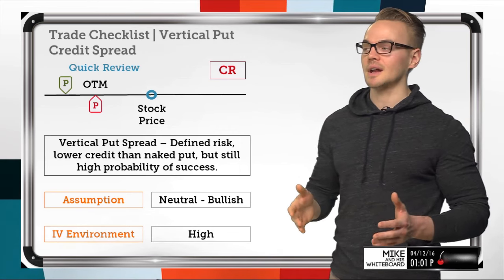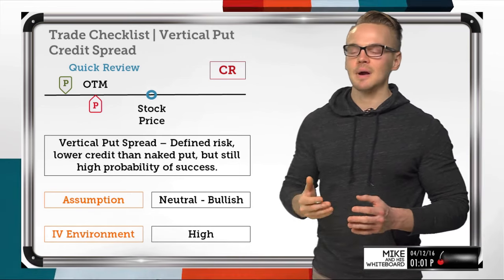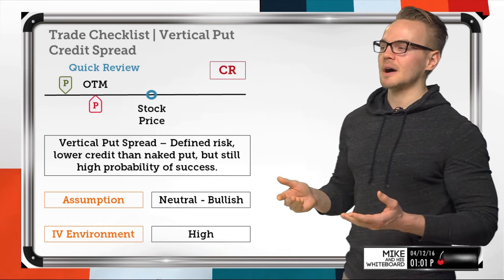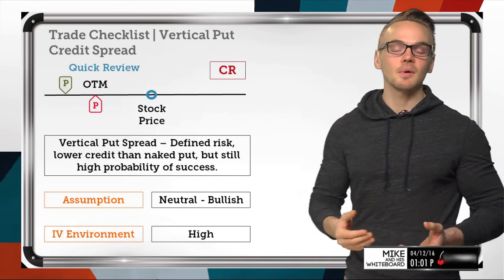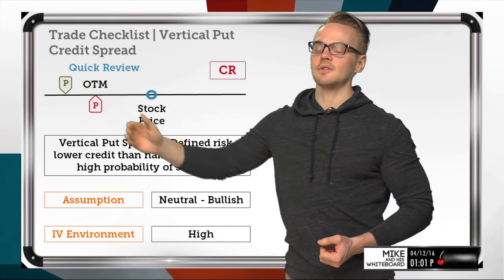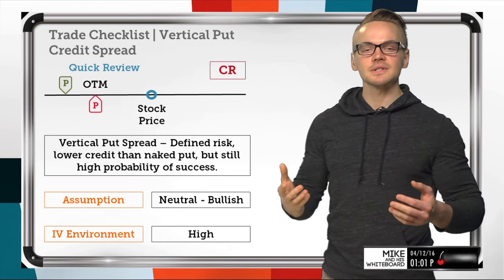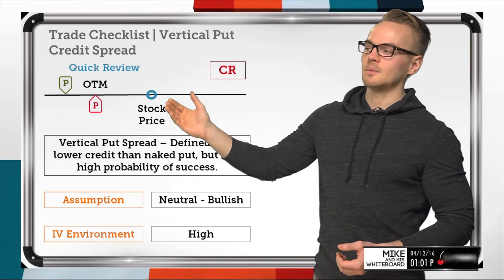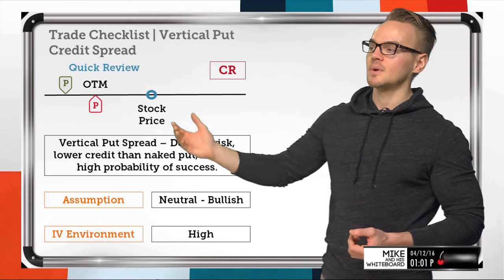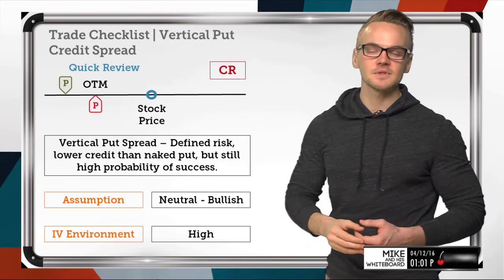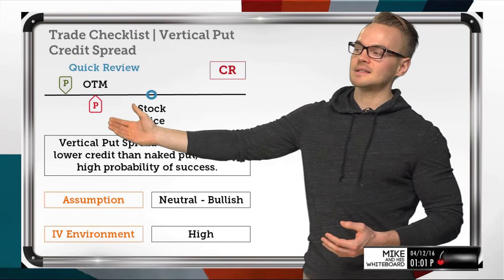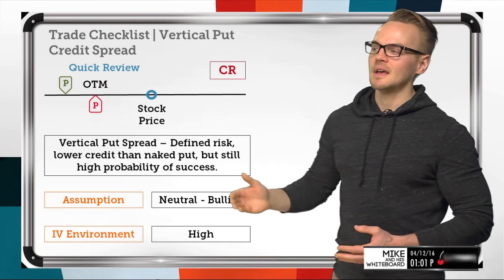A vertical put spread is defined risk, but we have to consider that it's going to carry a lower credit than the naked put. It's still going to have a high probability of success. The reason it's a lower credit is that we're selling an out-of-the-money put but also buying a further out-of-the-money put to define our risk. We want this spread to expire out of the money so we can collect the premium received originally as profit.